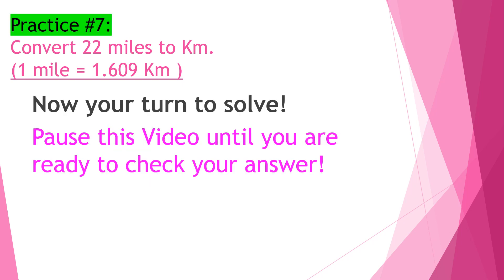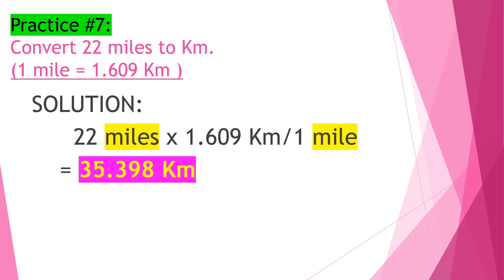Practice number seven: Convert 22 miles to kilometers. Our conversion factor is 1 mile equals 1.609 kilometers. Now it's your turn to solve — pause this video until you are ready to check your answer. The answer is 35.398 kilometers, that is 22 miles times 1.609 kilometers. Remember: the unit that needs to be cancelled should be in the bottom of the conversion factor.